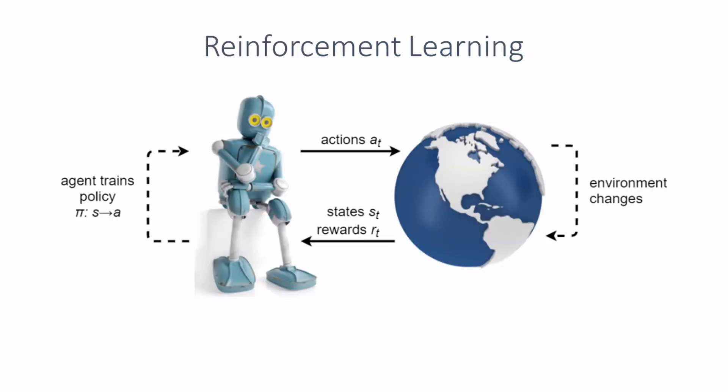In reinforcement learning, an automated agent is trained, shown as the robot here. The agent learns by interacting with an environment over several time steps. By applying actions, it gets feedback in the form of states of the environment and a reward value. Its goal is to maximize the total expected future reward. The so-trained controller is a policy mapping from a state space to an action space, which determines the agent's behavior.